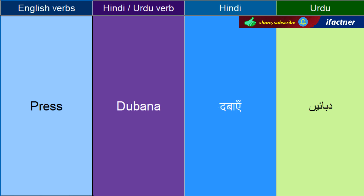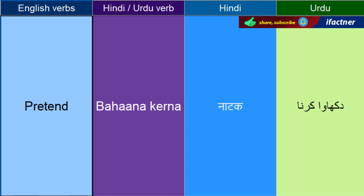Dabaanay ko kehengay — Press. Press it. Press this button — is button ko dabao. Bahana kerna, dikhaway kerne ko kehthay hain — Pretend. He pretends to be a good man — woh acha aadmi honay ka dikhaway kertay hain.